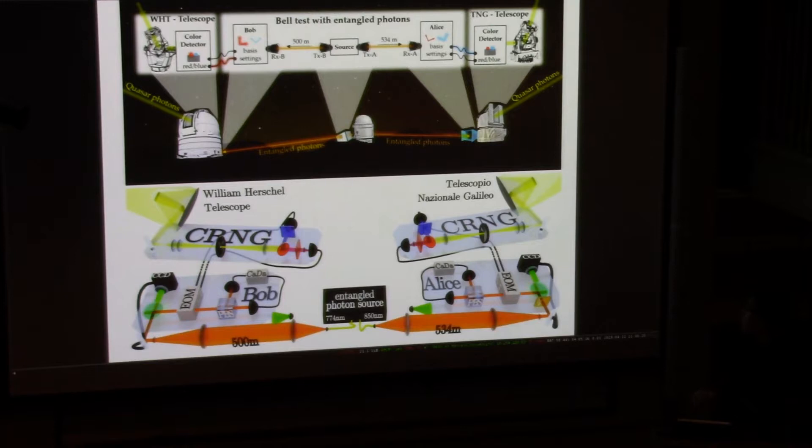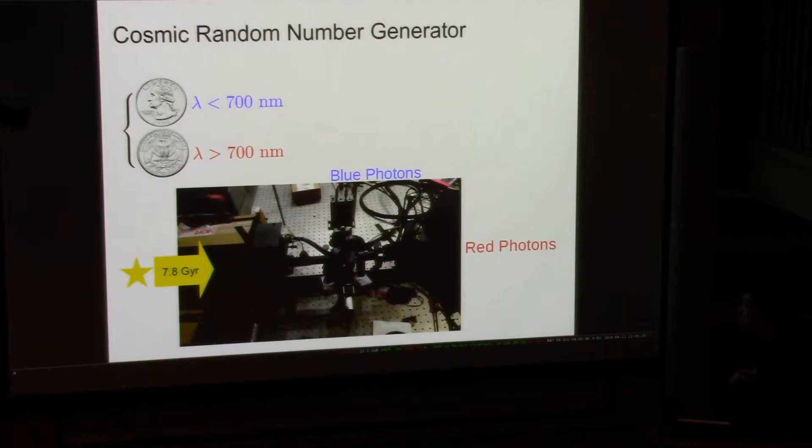At the same time, we commandeer two of the world's largest telescopes. The Telescopio Nazionale Galileo on this side, and the William Herschel Telescope on this side, in order to stare at two quasars whose light was emitted seven billion years ago. And while those photons were streaming in from the cosmos, they were generating random bits. I think one of the most interesting parts of this experiment is how we generate those random bits. This is what I did my undergraduate thesis on.